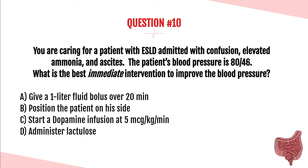Question number ten. You are caring for a patient with ESLD (end-stage liver disease) admitted with confusion, elevated ammonia, and ascites. The patient's blood pressure is 80/46. What is the best immediate intervention to improve blood pressure? A. Give a 1-liter fluid bolus over 20 minutes. B. Position the patient on his side. C. Start a dopamine infusion at 5 mcg/kg/min. Or D. Administer lactulose.